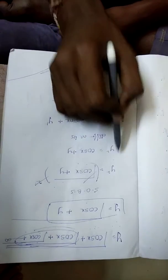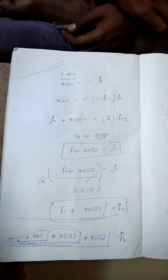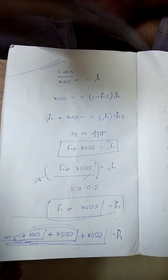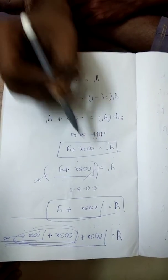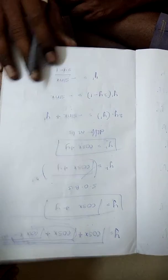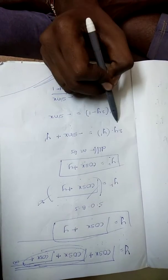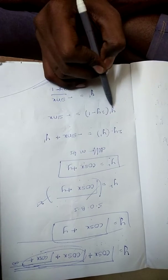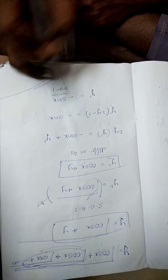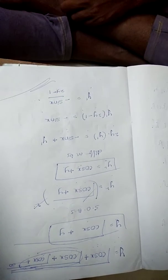The square root cancels, so y squared is equal to cos x plus y. Differentiating: 2y times y dash is equal to minus sin x plus y dash. Rearranging, 2y minus 1 times y dash equals minus sin x, so y dash is equal to minus sin x divided by 2y minus 1.